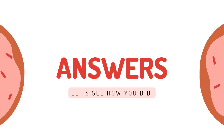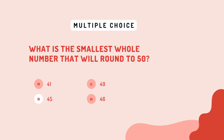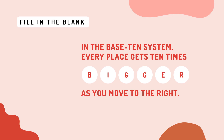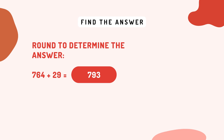Now it's time to see how you did. Multiple choice answer — true. And in the base 10 system, every place gets 10 times as you move to the right.